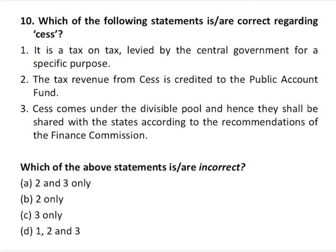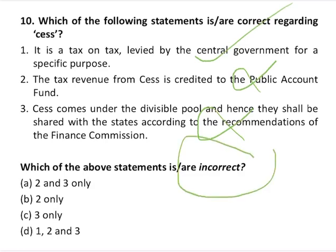The last question is about cess. Statement one says it is a tax on tax levied by the central government for a specific purpose — this is correct. Statement two says tax revenue from cess is credited to the Public Accounts Fund — this is wrong, because cess revenue is first credited to the Consolidated Fund of India, and the central government may after due appropriation by Parliament utilize it for the specific purpose. Statement three says cess comes under the divisible pool and shall be shared with states — also wrong, because a key feature of cess is that the Centre need not share it with states. Statements two and three are incorrect, so option A is the correct answer.